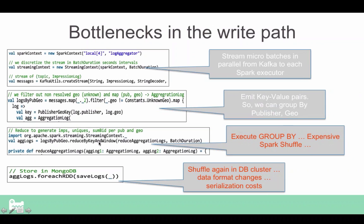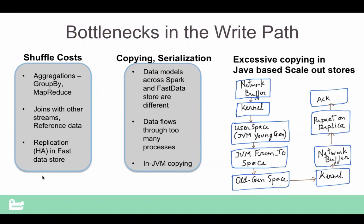There are two interesting problems. The first is that the moment you do a reduce in Spark — or any similar product — you run into a challenge because of the shuffle involved. Shuffle becomes one of the most expensive things in Spark, and it especially shows up in real-time applications. If you have a group-by with some joins, it gets really expensive and you may no longer be able to keep up with a high-rate stream. The second challenge is that once you write processed data to your store, that's yet again a shuffle inside the database cluster.